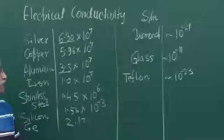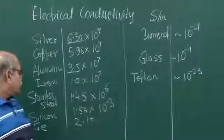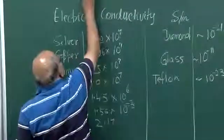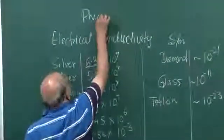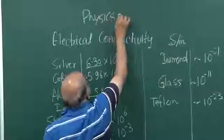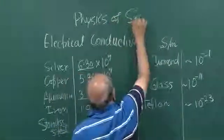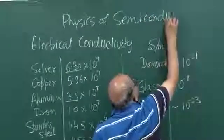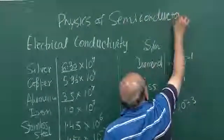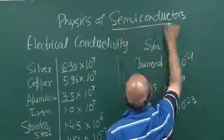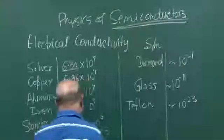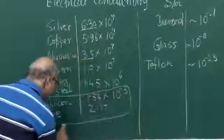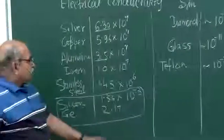That is the kind of variation. And what we are interested in this course, the course is physics of semiconductors. And the semiconductors, we are here, we are in this range.